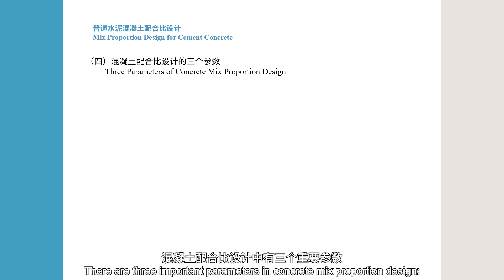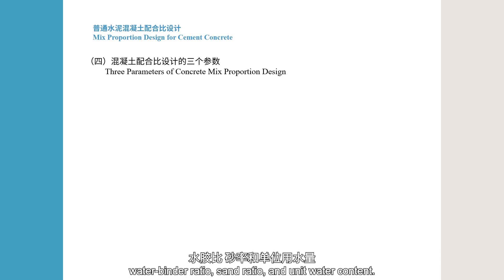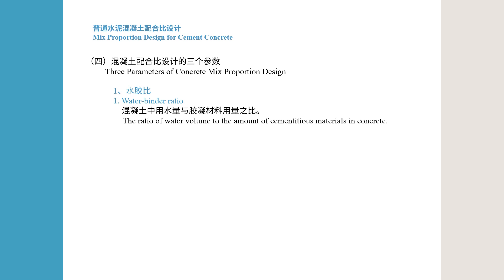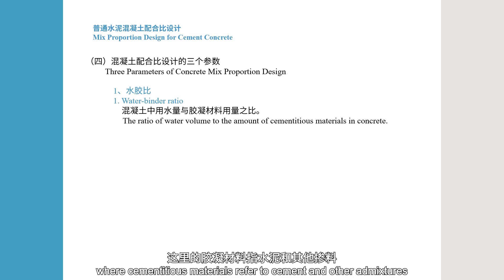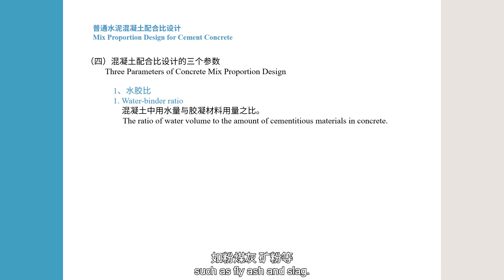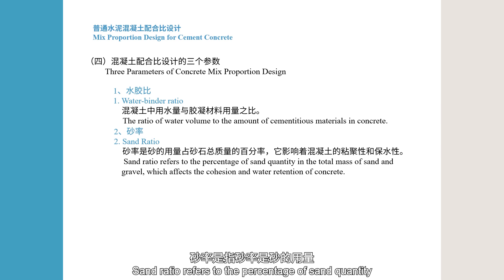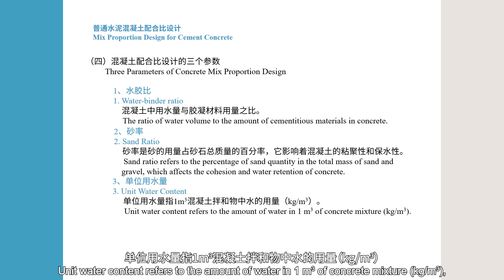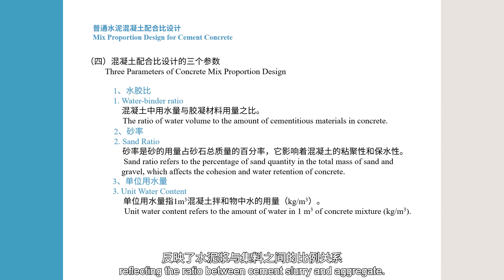There are three important parameters in concrete mix proportion design: water-binder ratio, sand ratio, and unit water content. Water-binder ratio refers to the ratio of water volume to the amount of cementitious materials in concrete, where cementitious materials refer to cement and other admixtures such as fly ash and slag. Sand ratio refers to the percentage of sand quality in the total mass of sand and gravel, which affects the cohesion and water retention of concrete. Unit water content refers to the amount of water in one cubic meter of concrete mixture, reflecting the ratio between cement slurry and aggregate.